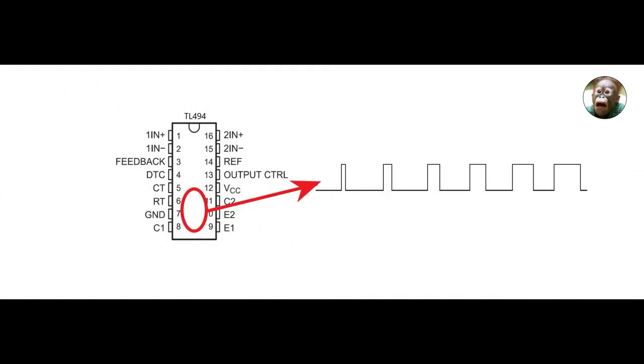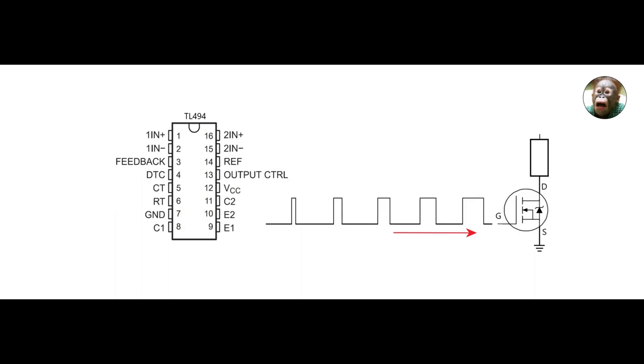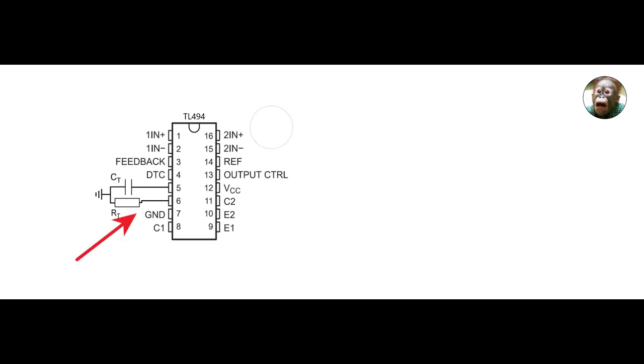The TL494 has an internal oscillator which generates the pulses you need for your power devices. We can control the frequency of this oscillator by connecting a capacitor and resistor to pins 5 and 6. The values of the capacitor and resistor will determine the frequency of the oscillator according to these equations.